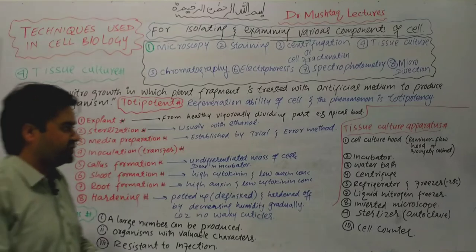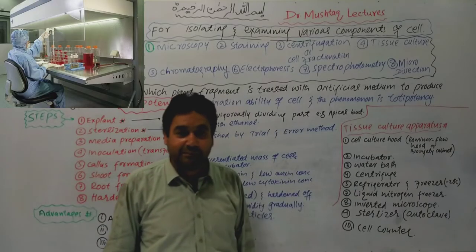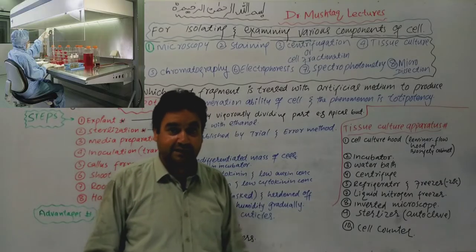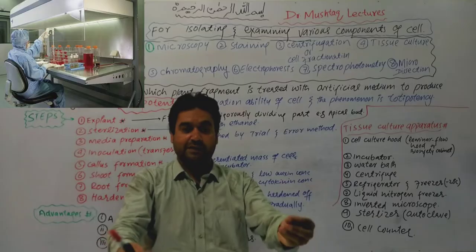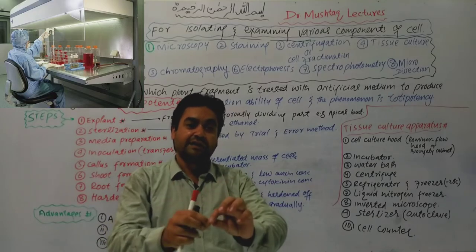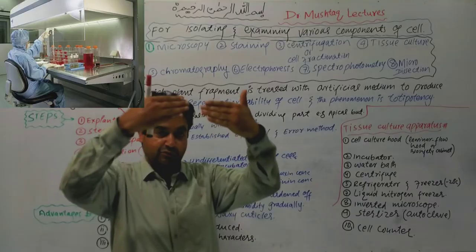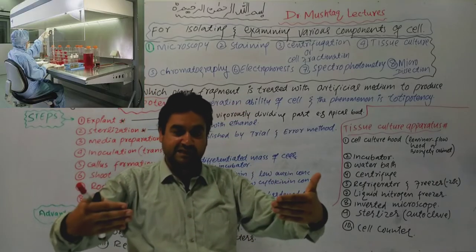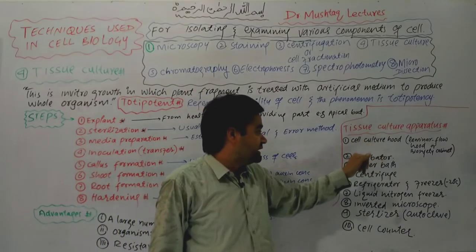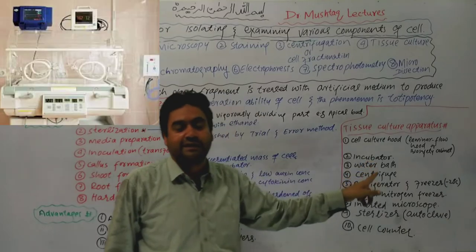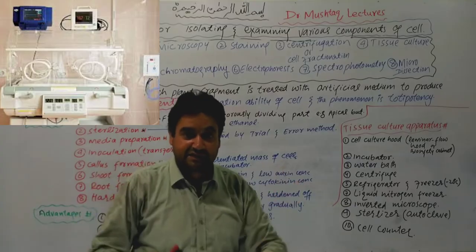The equipment used in tissue culture includes a laminar flow hood, which provides a sterile working environment. A safety cabinet protects against chemical contact. An incubator carries out growth in a controlled environment where carbon dioxide and oxygen levels are carefully controlled.